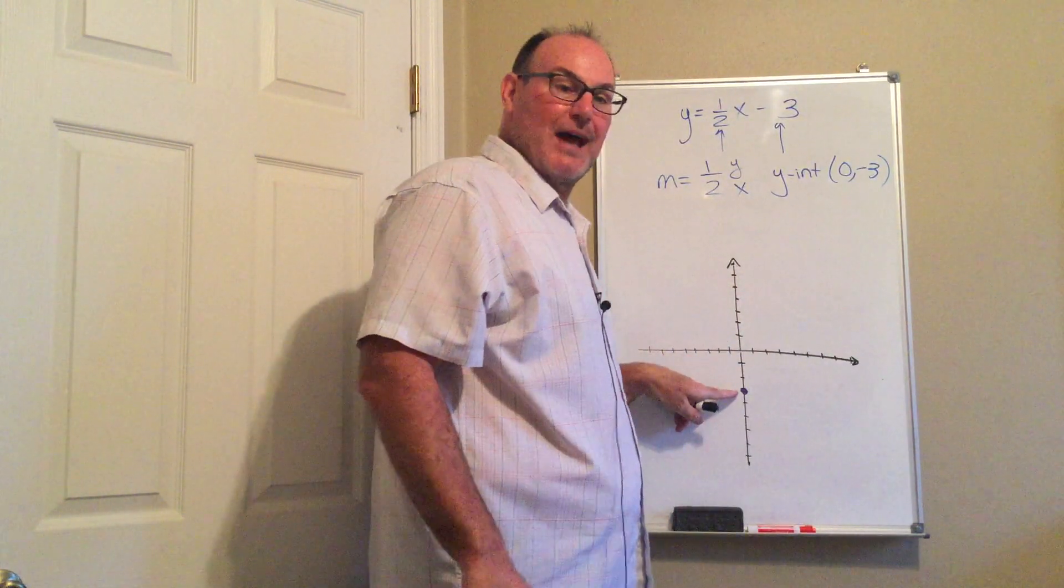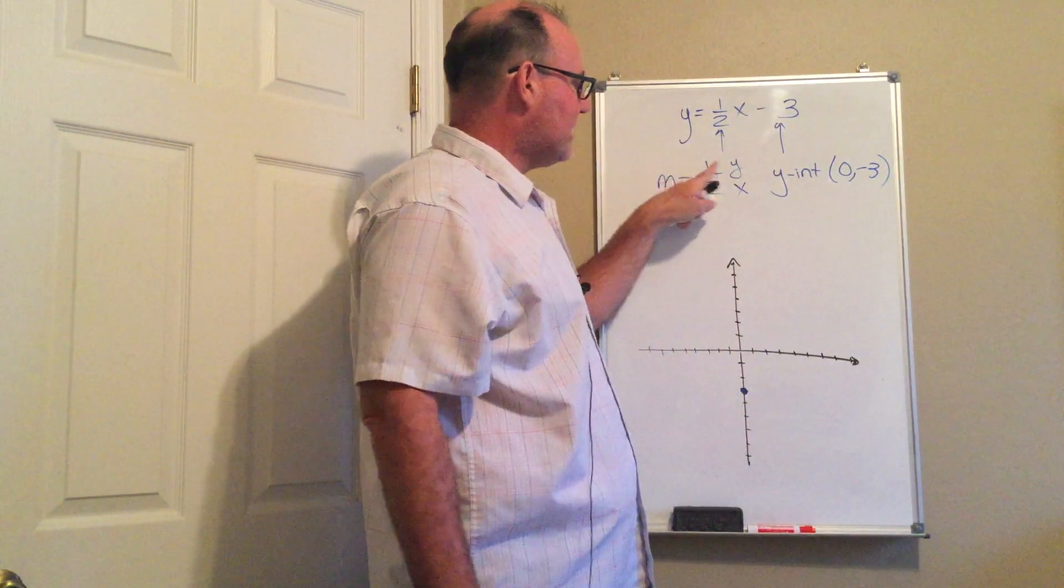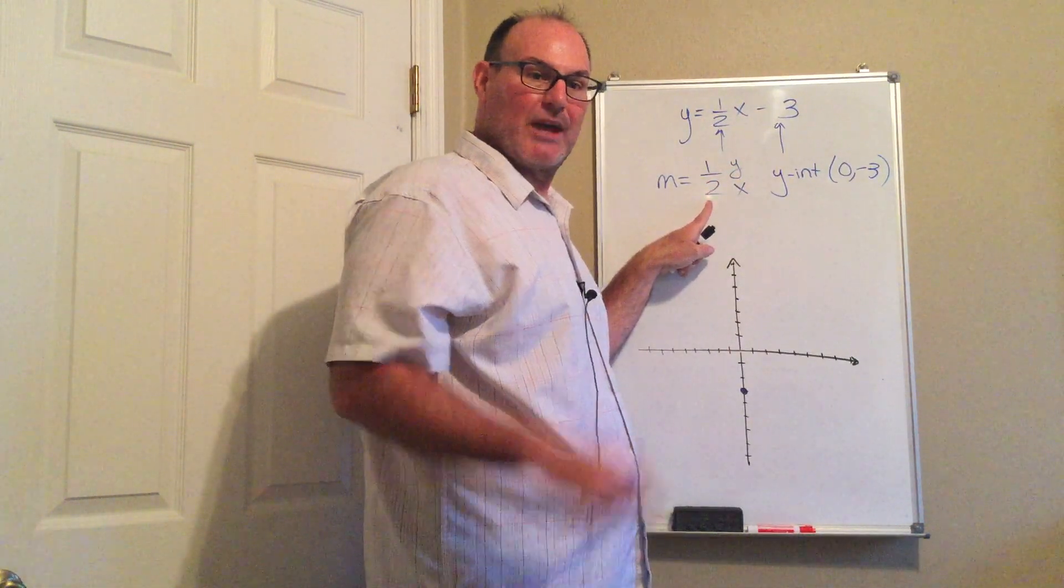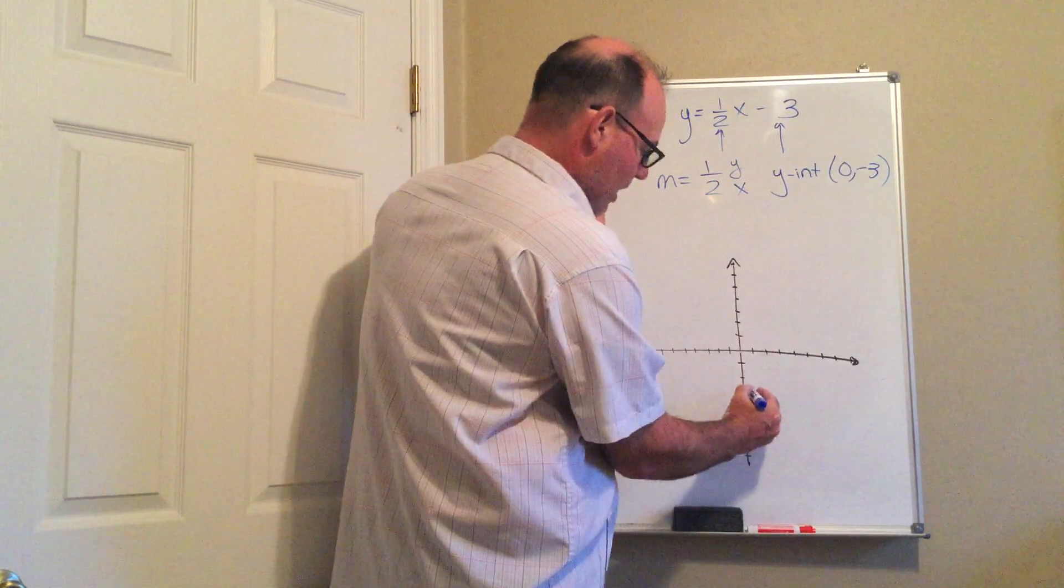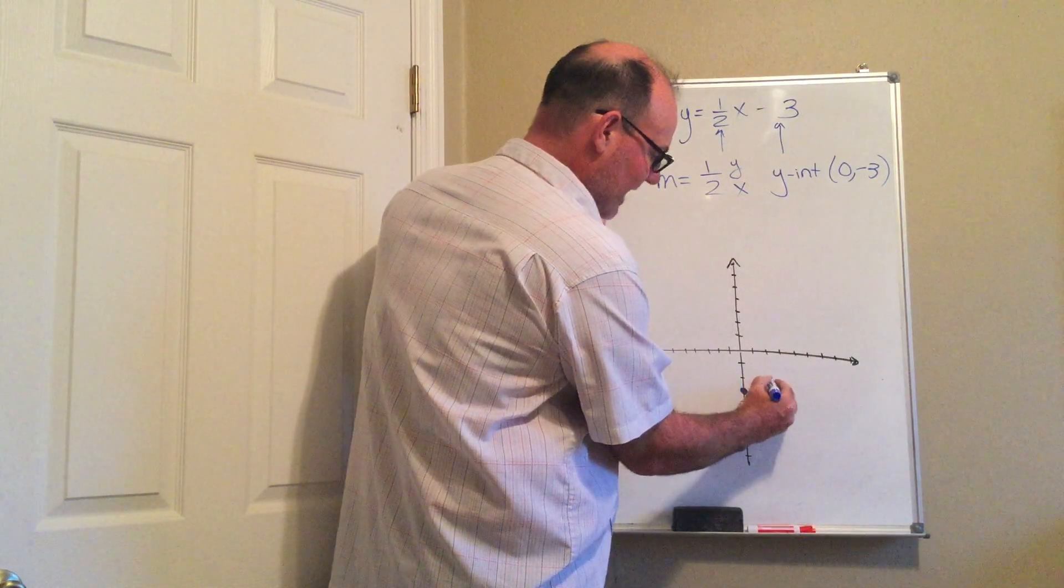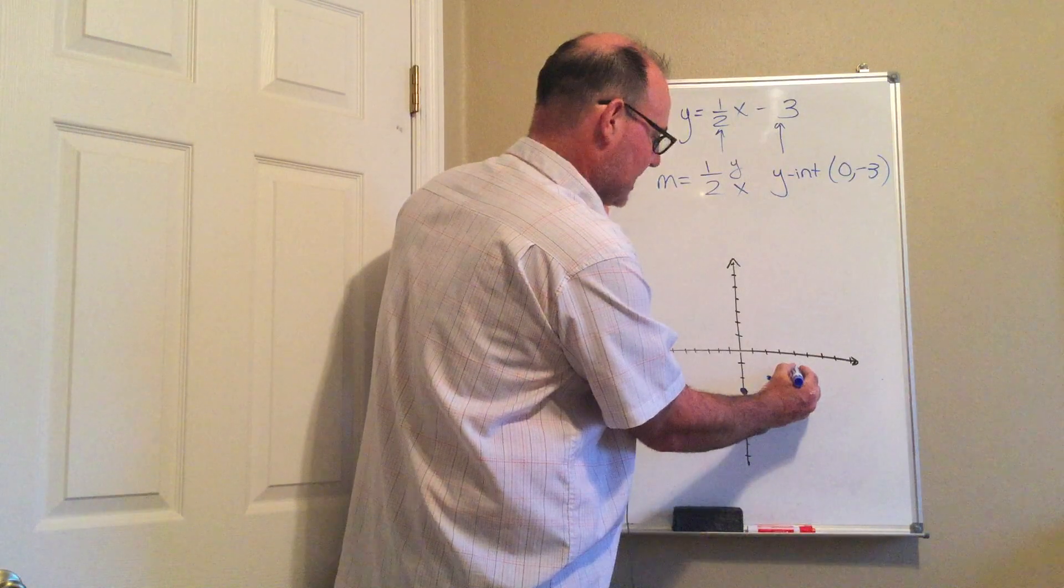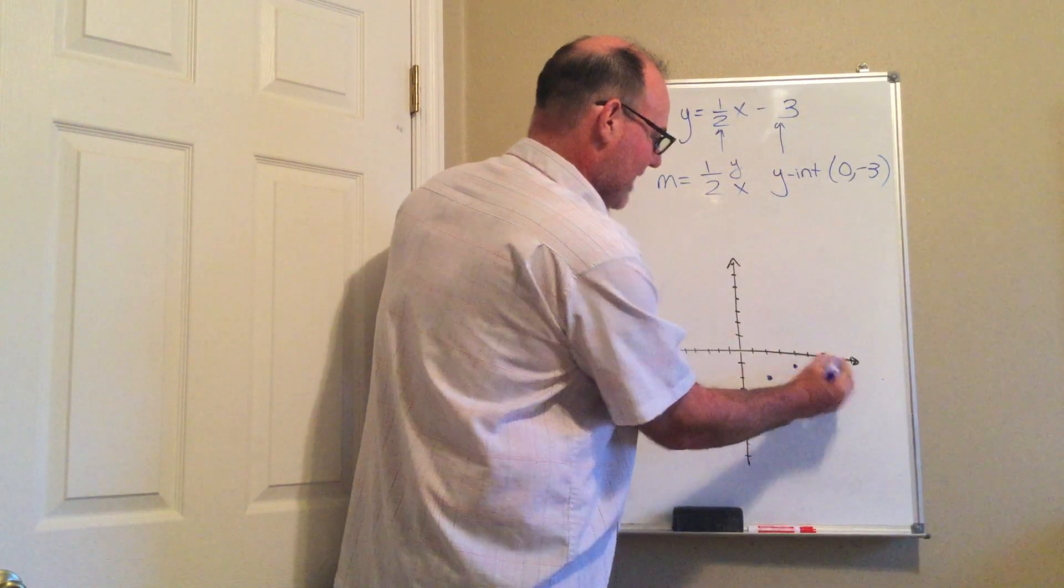So from my y-intercept, I'm going to go one unit in the y direction, so up 1, and then I'm going to go two units in the x direction, so right 2. So up 1, right 2, make a dot. Up 1, right 2, make a dot. I'm having a great time. I'm going to do it one more time. Up 1, right 2, make a dot.